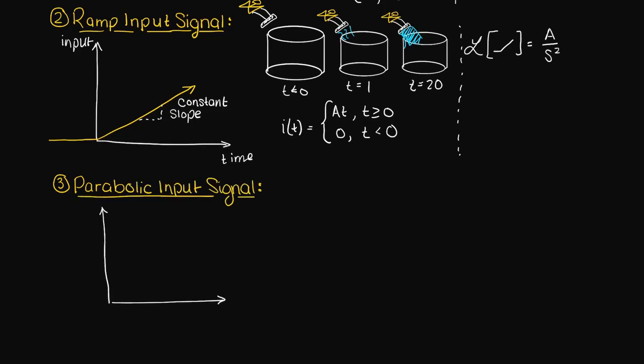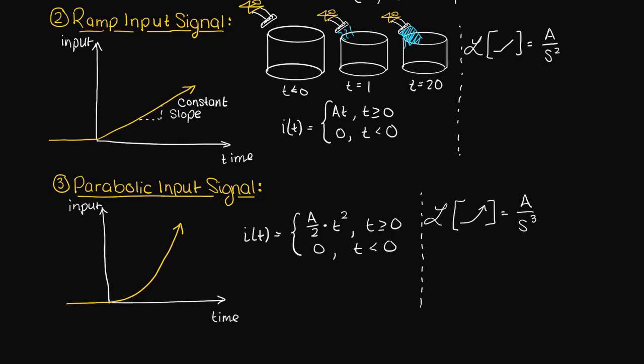We could also have a parabolic input signal. As its name implies our input signal would be growing parabolically with time and is represented mathematically like so. And its Laplace transform is also presented here.